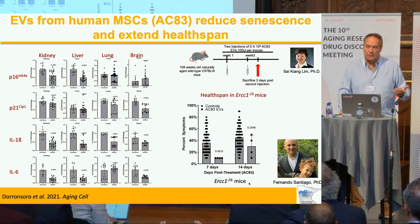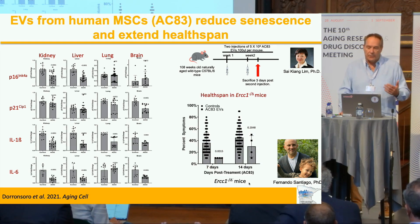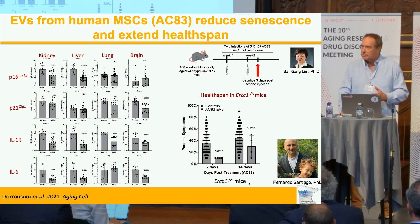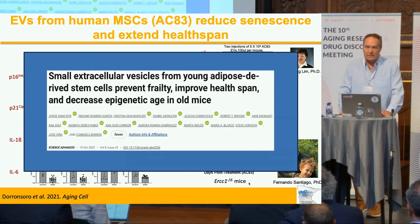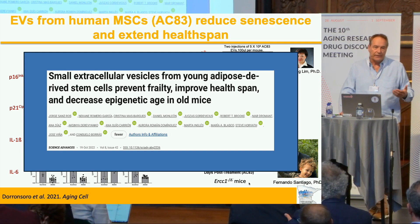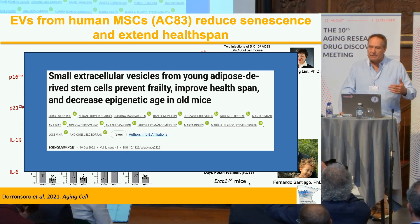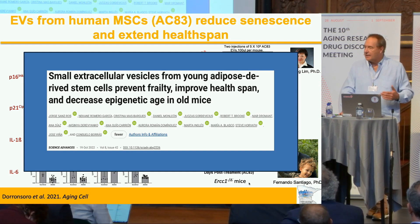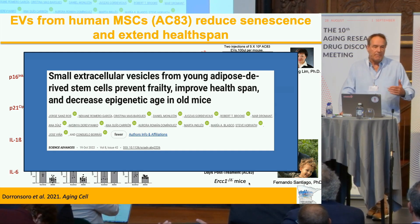If you inject them into Laura's progeria model that lives six months, two injections delayed the onset of symptoms and reduced their severity. So these human vesicles could suppress markers of senescence and inflammation and also extend healthspan. What was interesting was a follow-up paper showed a similar effect with adipose-derived MSCs, and they went on to show with Steve Horvath that these EVs actually partially — at least short-term — appeared to rejuvenate the epigenetic clock, suggesting these EVs may suppress senescence and inflammation but may also have some capacity to rejuvenate certain tissues.